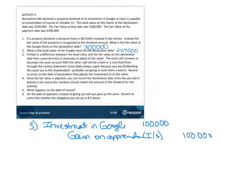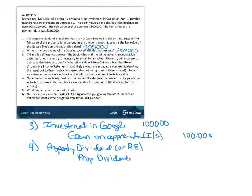Once we've done that, we can record the declaration entry, just like we did before. We debit 'Property Dividend' — or you could use Retained Earnings — and credit 'Property Dividends Payable.' The amount is for the fair value of the asset, recognizing that this is the value we are giving out to our shareholders. The analogy is: if we were giving them cash, we would record the value of that cash.